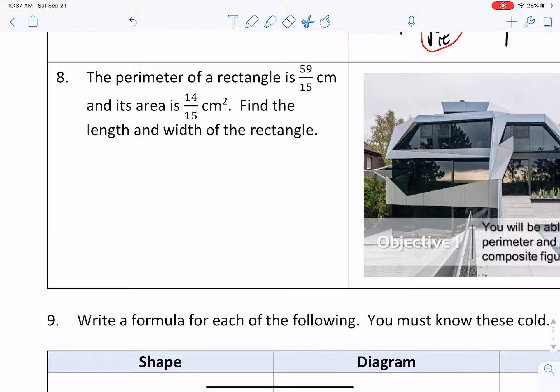The perimeter of a rectangle is 59 over 15 centimeters and its area is 14 over 15 square centimeters. Find the length and width of the rectangle.